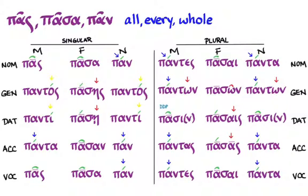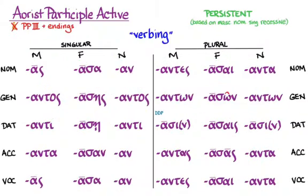Now, with any luck, all of this looks familiar, apart from the accents, because this declension is exactly the same as the aorist participle active endings, which you've just been learning in your study of participles.